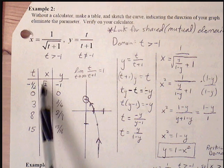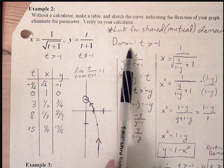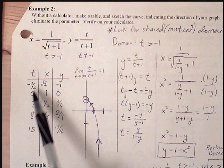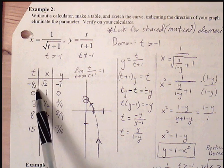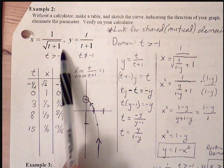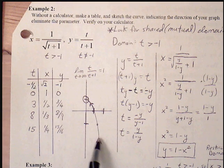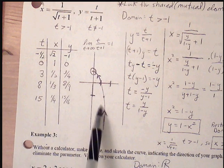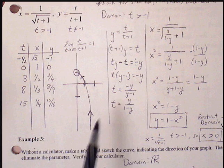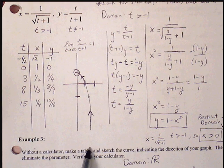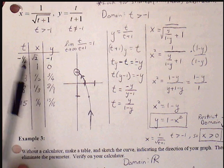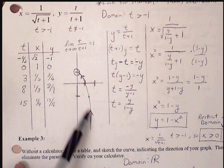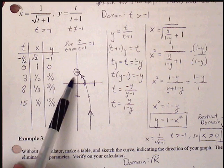However, there's a gap between 0 and negative 1. We know the graph can never be negative 1. However, there are some values we can test, so let's just pick an easy decimal there, easy fraction, negative 1 half. If I plug negative 1 half, I'll get square root of 2, negative 1. And if I keep on choosing values closer to 0, the y values will move more in the negative direction. So we see that the direction of the graph, as t increases, will be moving in this direction.